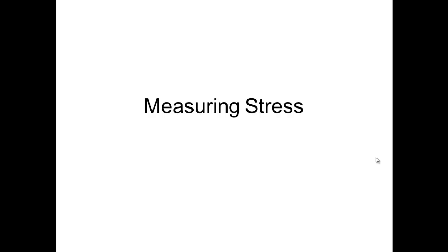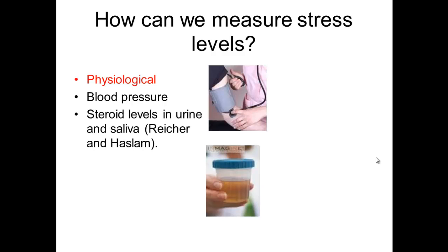We're going to look at three different techniques for measuring stress. The first one, you can probably guess from the pictures, is physiological. There are different ways you can physiologically measure stress — you can measure somebody's blood pressure, the idea being that when they're more stressed their blood pressure is probably going to rise. You can also look at hormone levels, in this case steroids or cortisol levels in urine and saliva. An example of that is from the Riker and Haslam study.